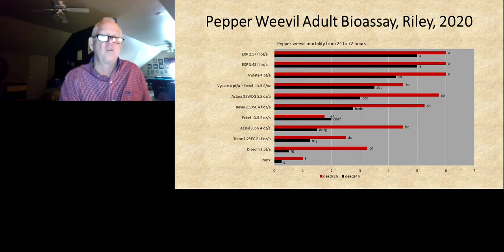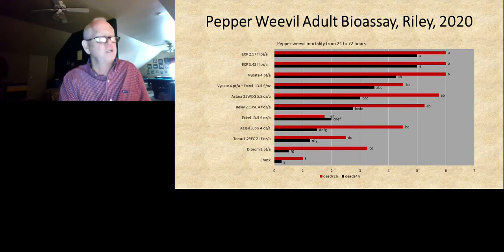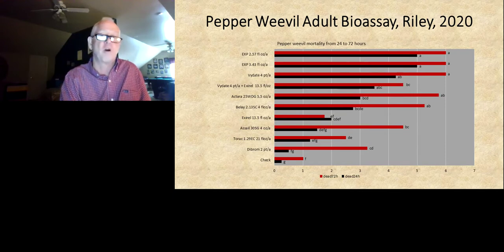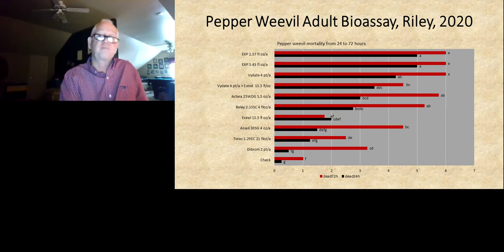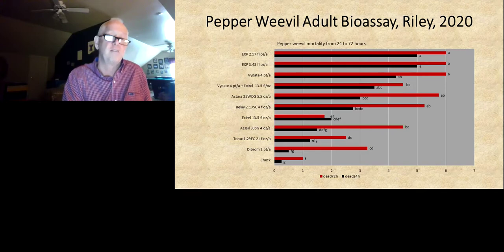Diazinon did not give a lot of direct mortality either, but it could be a rotation partner as well, although it only gave about 50% mortality. We do have an experimental product that has looked excellent. Unfortunately, it's probably going to be two or more years before we see it on the market, if at all. At that point, it would very likely be limited to pre-bloom application, so we might be able to use it to clean up a field before it starts fruiting, but it won't be an in-season product.